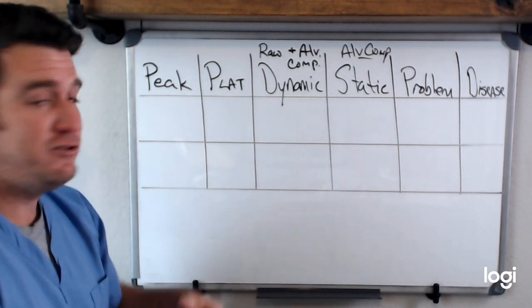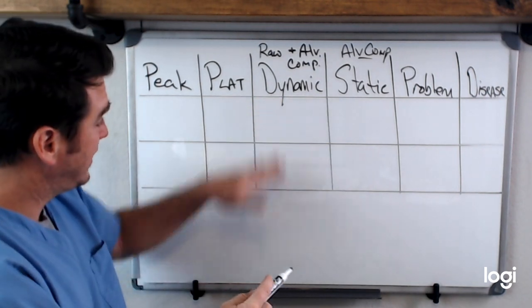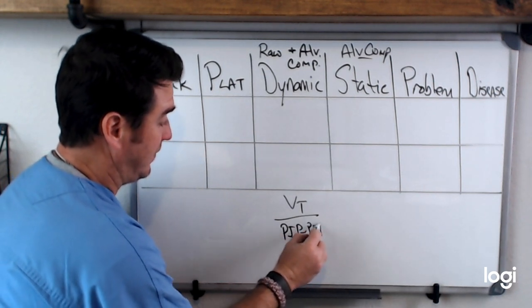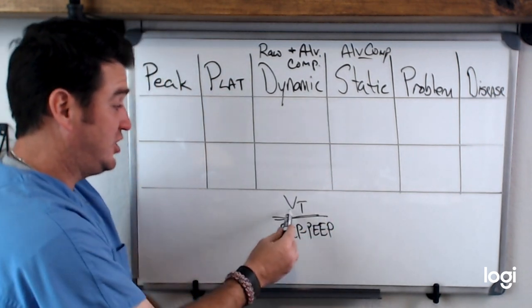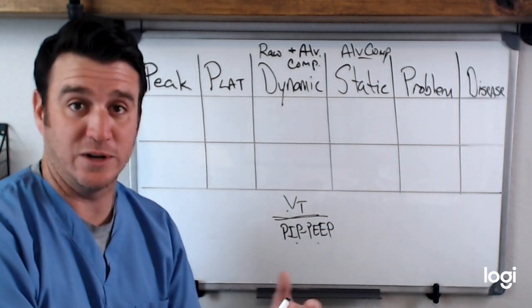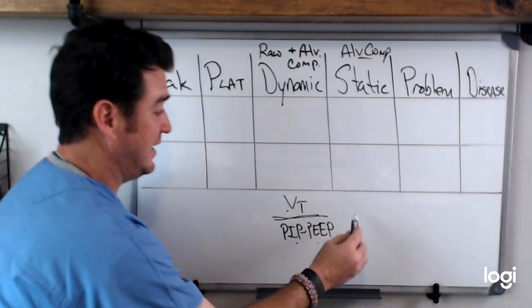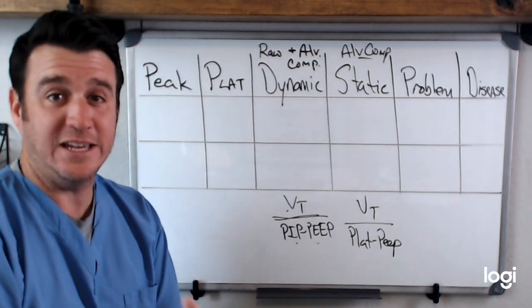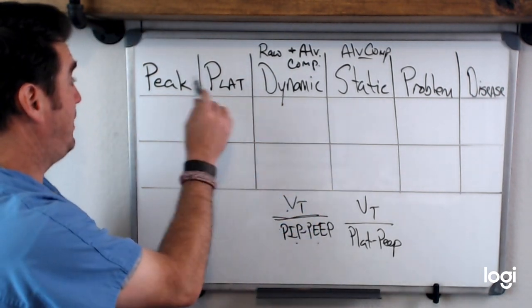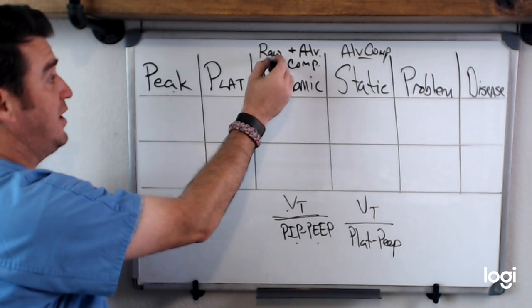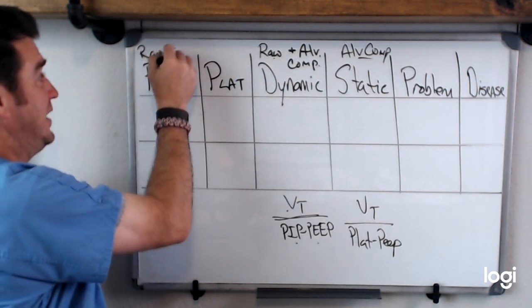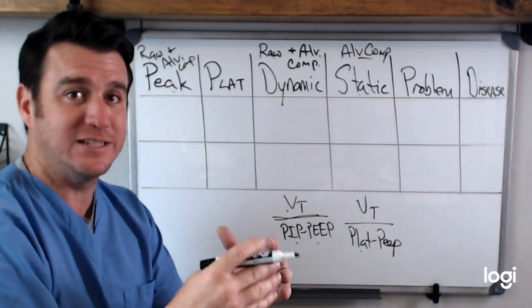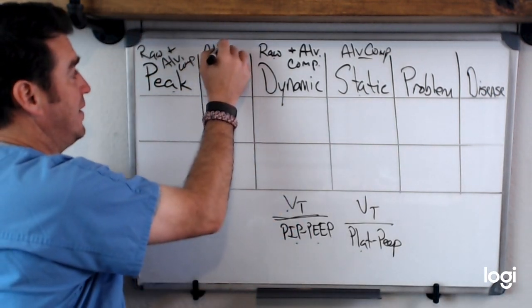To understand how we get these things, you just need to go back to your formulas. Dynamic compliance formula is tidal volume divided by PIP minus PEEP — this gives us change in volume over change in pressure, which is what compliance is. Static compliance is tidal volume divided by plateau minus PEEP. This tells us that peak inspiratory pressure is also going to be a reflection of airway resistance and alveolar compliance, while plateau — associated with static compliance — is only a reflection of alveolar compliance.